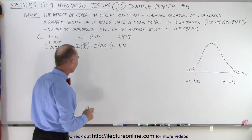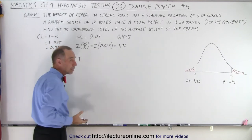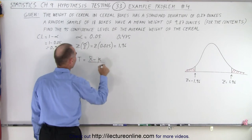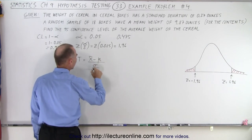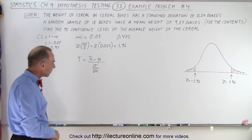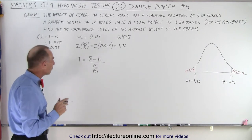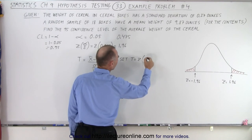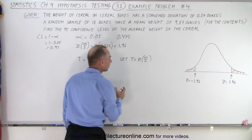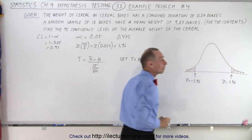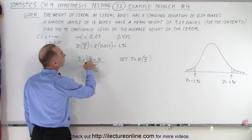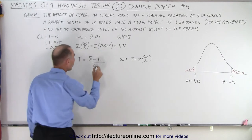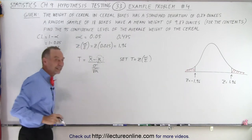Normally we find the test statistic. The test statistic to determine whether or not we reject or accept the null hypothesis is calculated as the sample average minus the population average, divided by the standard deviation of the population divided by the square root of the sample size. What we're going to do here is set the test statistic equal to the boundary of the critical region. We're given the sample average weight, the population standard deviation, and the sample size — so the only unknown is the population mean.